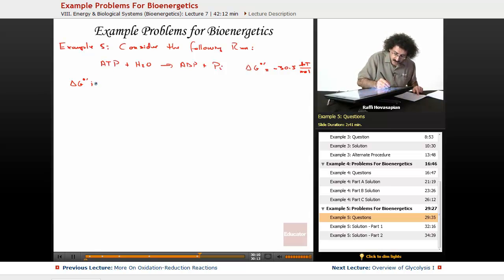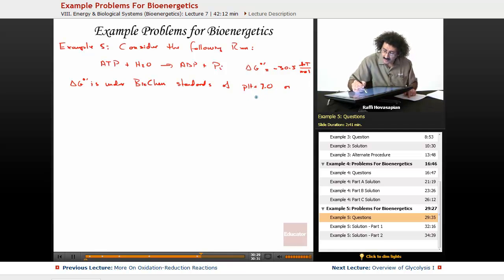Now, delta G is under biochem standards, right? Is under biochem standards of pH equal to 7.0 or a hydrogen ion concentration equal to 10 to the minus 7.